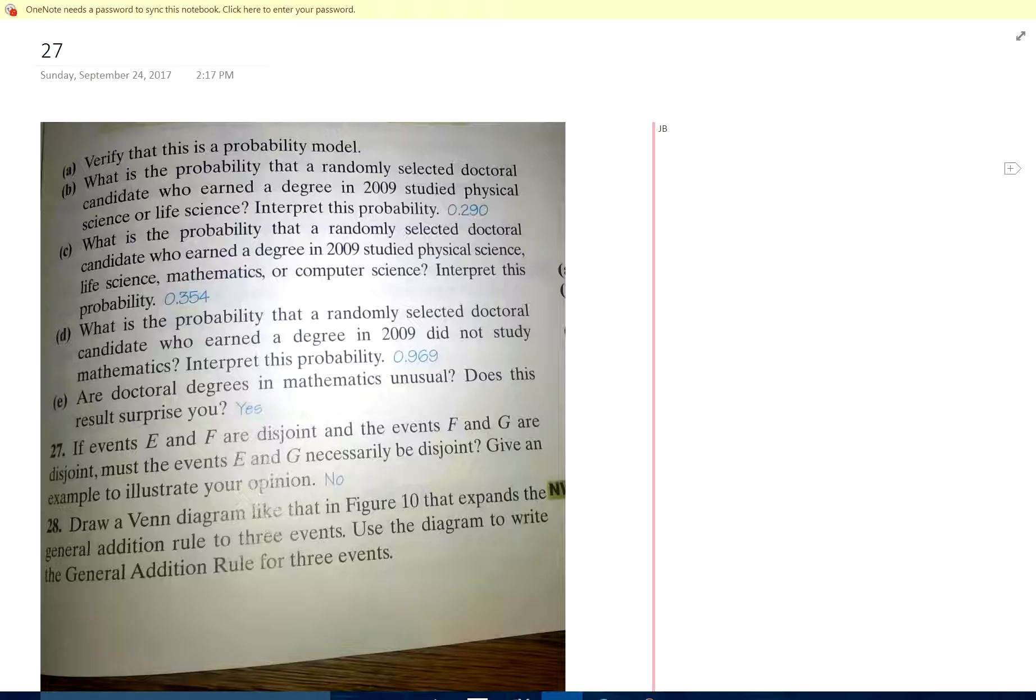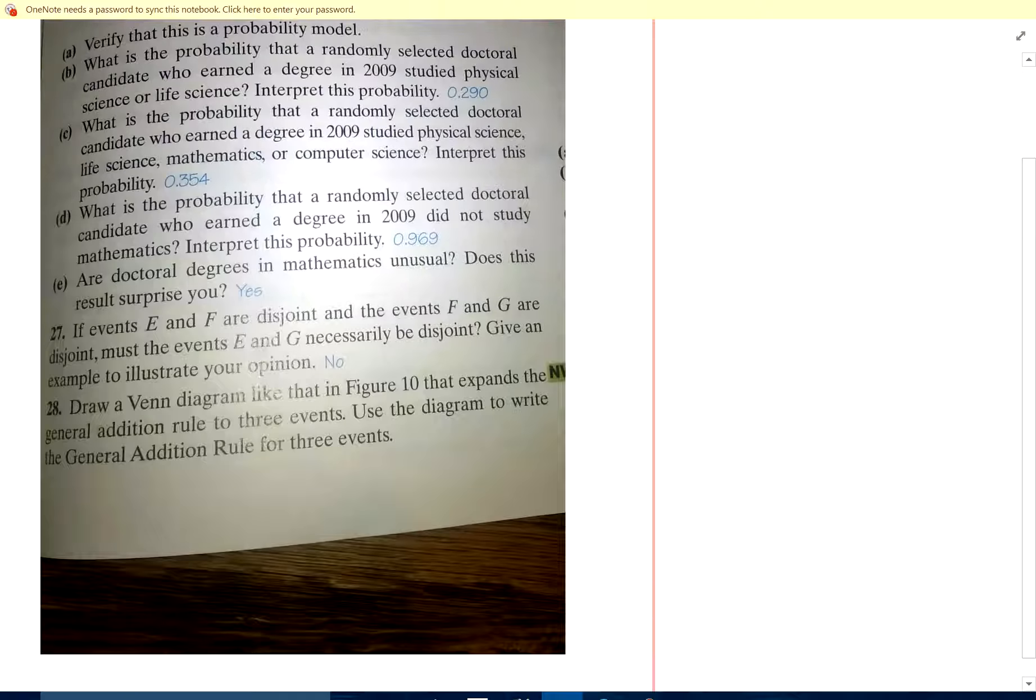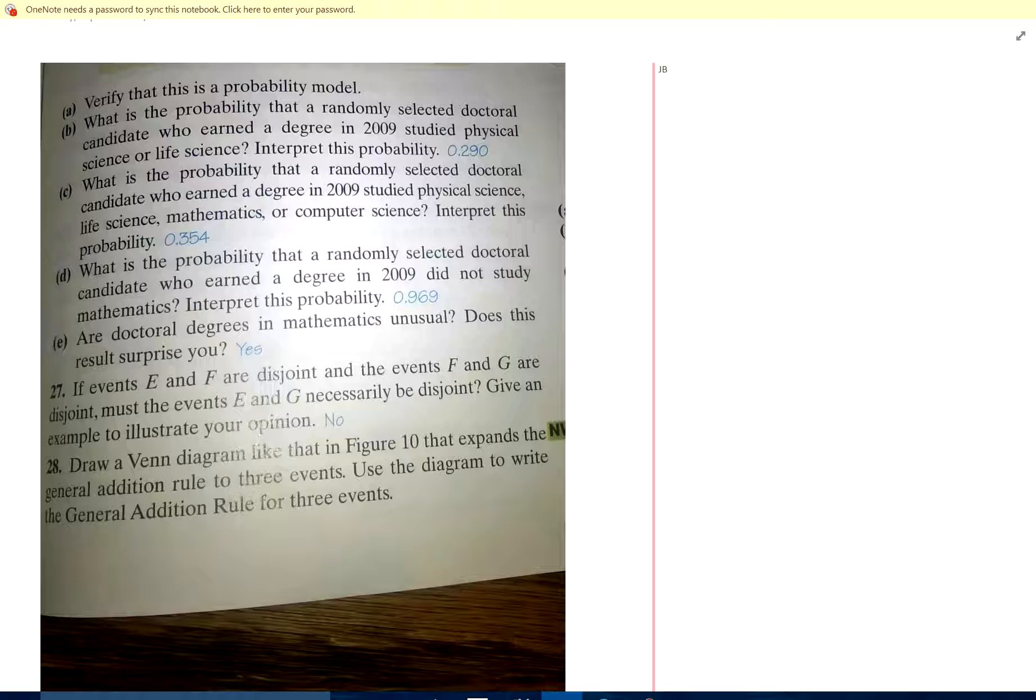27. What is 27? Oh boy, sorry I didn't get that down either. What does 27 the problem say? Oh, I'm looking at the wrong thing, 27 is right here. Sorry about that. If E and F are disjoint, and F and G are disjoint, must E and G be disjoint? Give an example to illustrate your opinion.